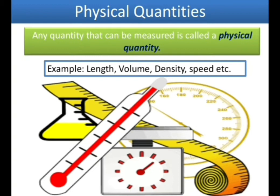So let us begin with: what is a physical quantity? Anything that can be measured is called a physical quantity. Examples include length, volume, density, and speed. Physical quantities are simply what we can measure.